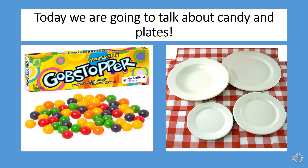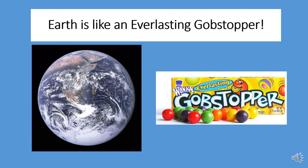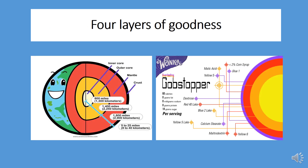Today we're going to talk about candy and plates — well, sort of. Earth is like an everlasting gobstopper, that candy that's hard as a rock and takes forever to get down to the center of its goodness. The Earth and an everlasting gobstopper are similar in that they each have four layers.